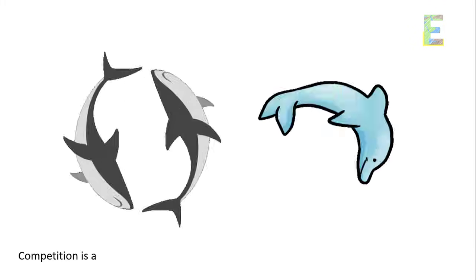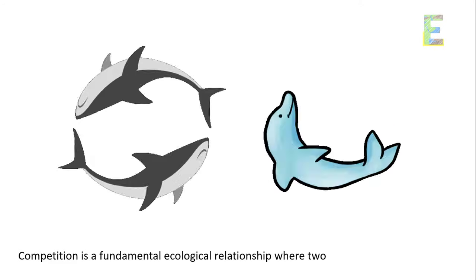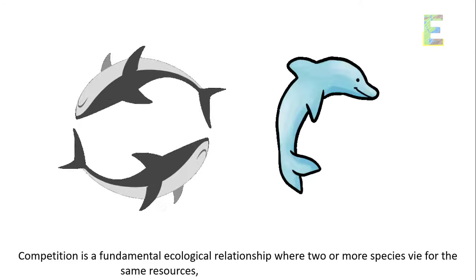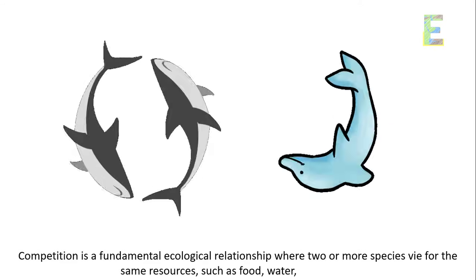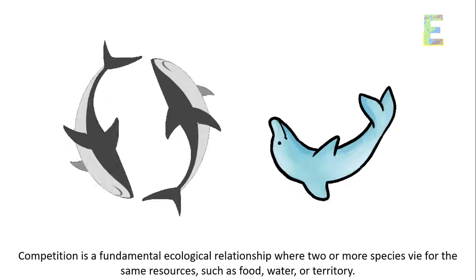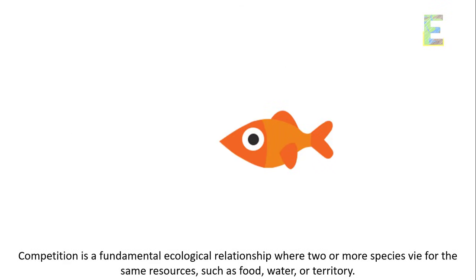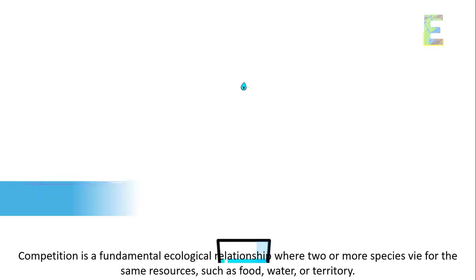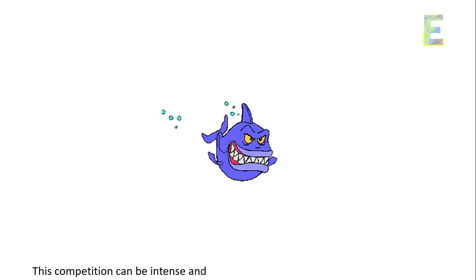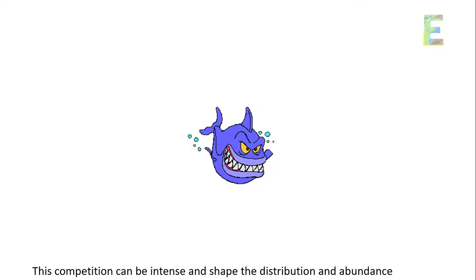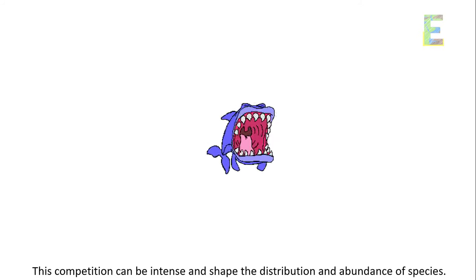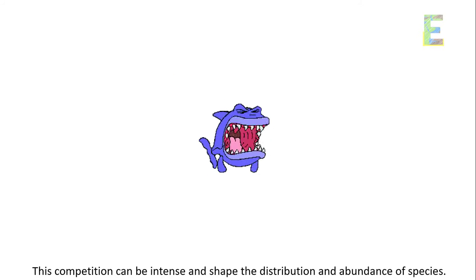Competition is a fundamental ecological relationship where two or more species vie for the same resources, such as food, water, or territory. This competition can be intense and shape the distribution and abundance of species.